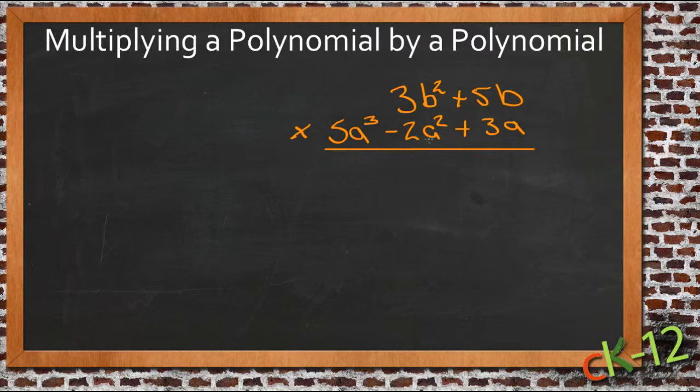So that's what we're going to do with this particular example. We have 3b squared plus 5b, and it's multiplied by 5a cubed minus 2a squared plus 3a. So we're going to do this again just as if it were a multiple digit multiplication problem from elementary school.